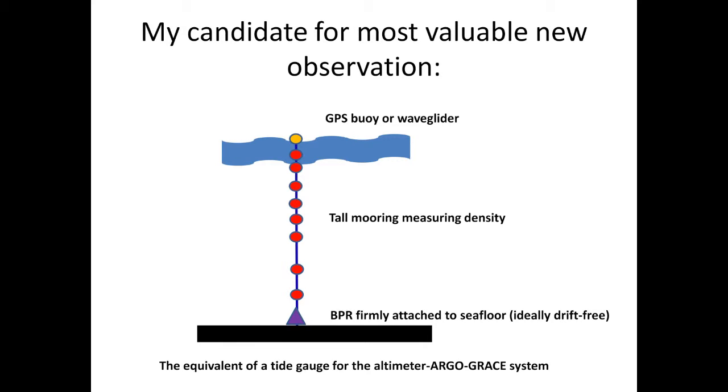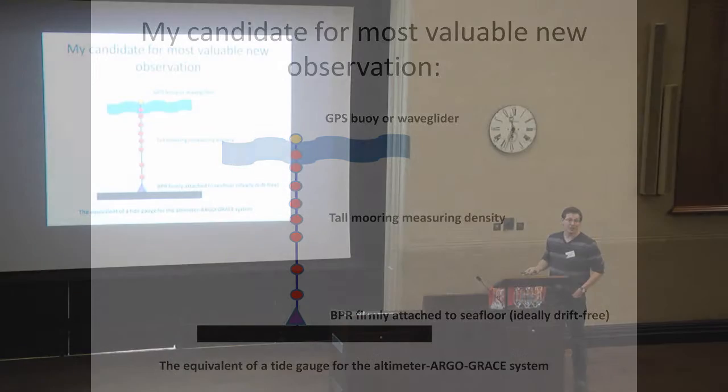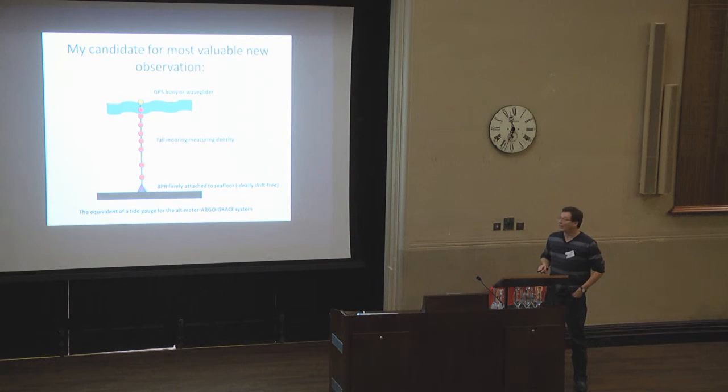So, following on from the question to Annie yesterday about what would be an important new observing system, this is my candidate. I think we could do some fantastic stuff with a bottom pressure recorder, ideally, a magic new bottom pressure recorder that doesn't have drift, a tall mooring measuring density, and a GPS point on the top. And that's, for the Argo GRACE, altimeter Argo GRACE system, this is the equivalent to a tide gauge for just the altimeter system. Just a few of these in the right places targeted would be a magnificent addition to our global observing system. So, I'll finish there. Thanks.